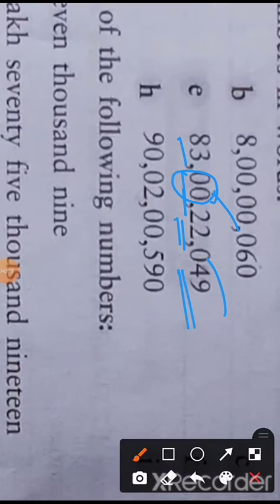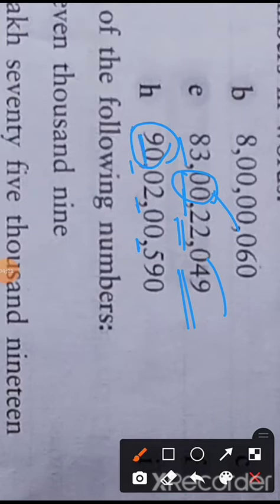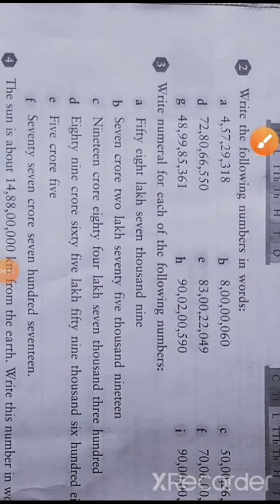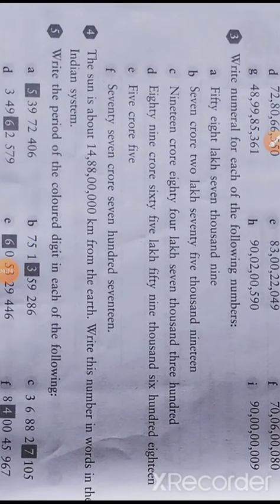In question number h, there are again three commas, so it is in the crore house. There are two digits before the last comma, meaning ten crore — so ninety crore. There is nothing in the ten lakh place, but in the lakh place there is two, so we say two lakh. There is nothing in the thousands and ten thousands place, so we go directly to five hundred ninety. Answer: ninety crore two lakh five hundred ninety.